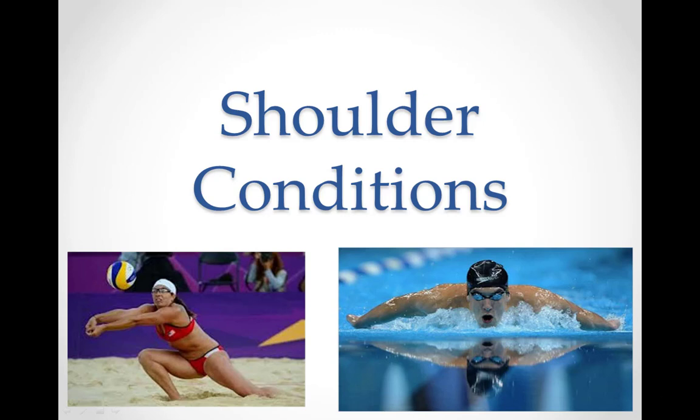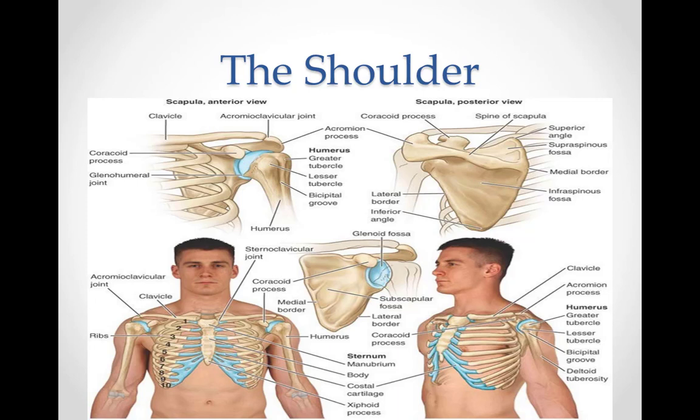Shoulder conditions. The human shoulder is made up of three bones: the clavicle or collarbone, the scapula or shoulder blade, and the humerus or upper arm bone, as well as associated muscles, ligaments, and tendons. The shoulder must be mobile enough for the wide range of actions of the arms and hands, but also stable enough to allow for actions such as lifting, pushing, and pulling. The compromise between mobility and stability results in a large number of shoulder problems not faced by other joints such as the hip.